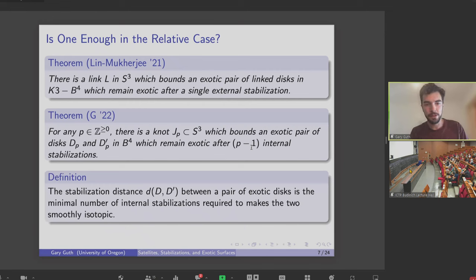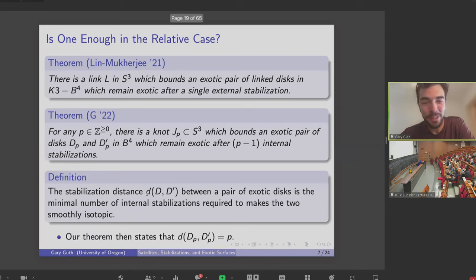And just some terminology here. We say that the stabilization distance between a pair of exotic disks is the minimal number of internal stabilizations required to make the two smoothly isotopic. Excuse me, sorry. So rephrasing, our theorem just says that the stabilization distance between these two disks we construct is exactly P.